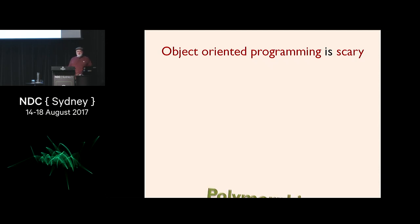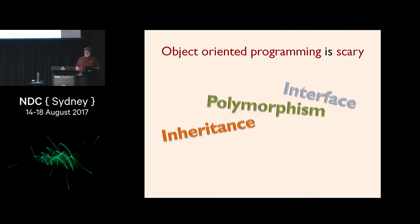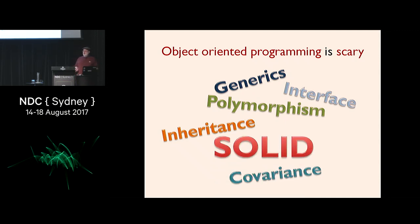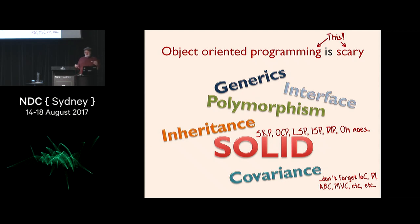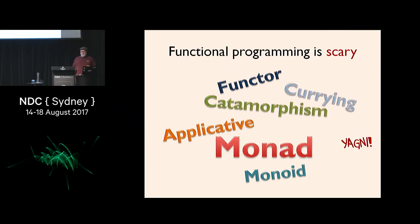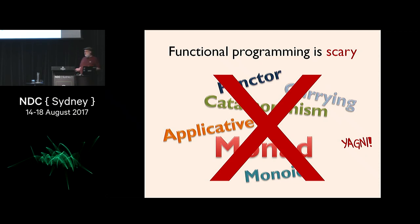What's really scary is object-oriented programming, because there are all these buzzwords like polymorphism, inheritance, covariance, and SOLID — which is itself another five abbreviations. There's a lot of weird stuff in OO programming, but you're just used to it, so you don't think it's scary. There's also IoC, DI, and so many other jargony buzzwords. The good thing about this talk is you won't need any of that — I'm not going to talk about monads or monoids. For domain modeling, you can forget about all that stuff; it's not relevant.